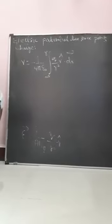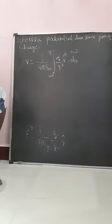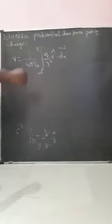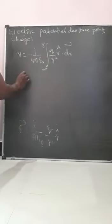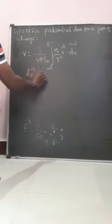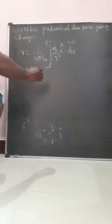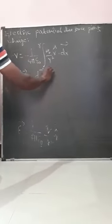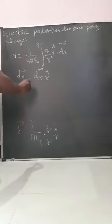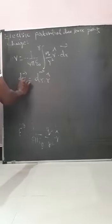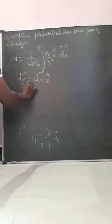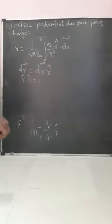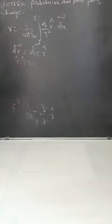Now, R cap into dr vector — here dr vector is equal to dr into R cap. This means R cap into R cap is nothing but 1, so R cap dot R cap equals 1. Then you are going to substitute this result here.